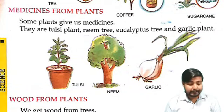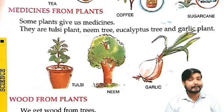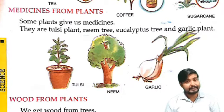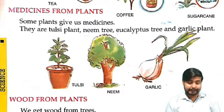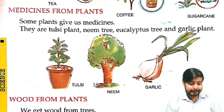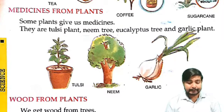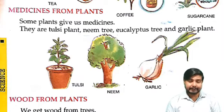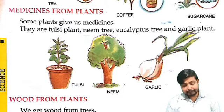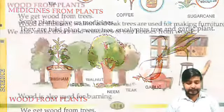Then medicine from plants. Aise bhi kai sare plants hai jisse hum different types of medicine paate hain. Some plants give us medicine. They are tulsi plant, neem tree, eucalyptus tree, garlic plant. Yeh itne bhi sare plants hain, yeh sab hamein medicine dete hain, jaise ki tulsi, neem tree, eucalyptus, garlic plant, theek?